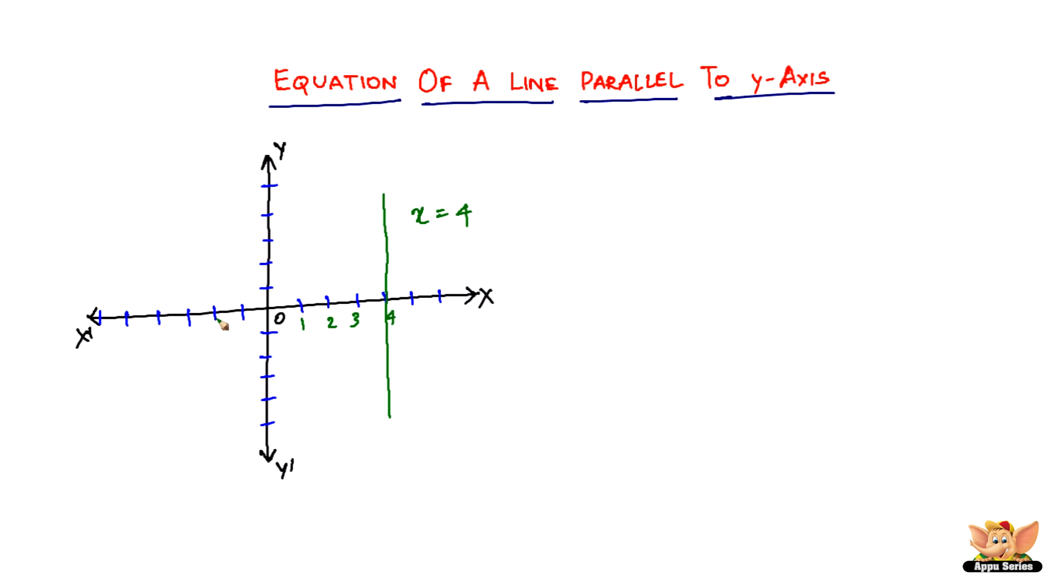Now if the same line was, say, on the negative side of the x-axis, say exactly somewhere here, it will be what? Negative 1, negative 2, negative 3, right? So it will be x equals negative 3.